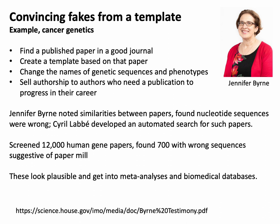Together with Cyril Labbe, she developed a way to search for these sequences, and they were able to do an automated search. With colleagues, they ended up screening 12,000 human gene papers automatically and found 700 of them had wrong sequences suggestive of a paper mill. Scaled up, this suggests thousands and thousands of wrong papers. These paper mill products look plausible, get into decent journals, then get picked up and put into meta-analyses and biomedical databases — and an awful lot of genetics research these days uses automated harvesting of data from biomedical databases to do things like drug design. So this is really high stakes and quite serious.